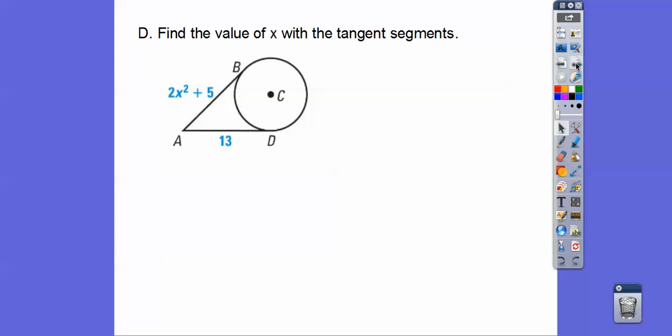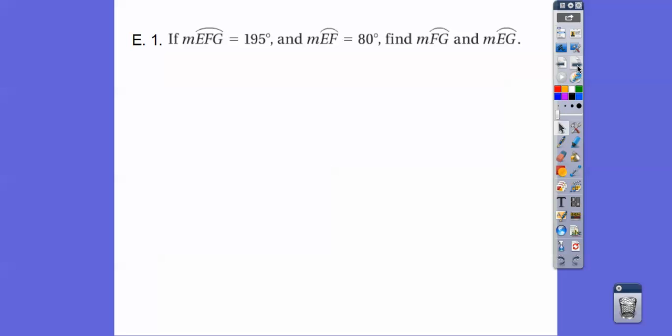Tangent segments from the same outside piece are congruent to each other. So, we just set those equals, subtract 5, divide by 2. And then we get plus or minus 2 in an algebra class. Now, since we're squaring it, it can be plus or minus 2 because when we square it, it's going to be positive. So, both those are the correct answer right there.